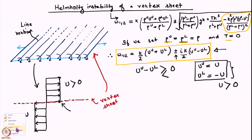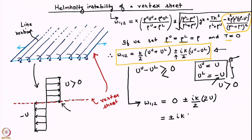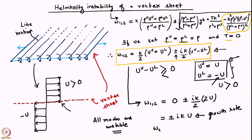If you substitute u_u equals U and u_l equals minus U into the dispersion relation, then omega_{1,2}: the first term goes to zero, and we have ik/2 times (u_u minus u_l) which is just 2U. So this is purely imaginary and equals plus or minus ikU. This tells us something very interesting — any wave number k basically grows. All Fourier modes are unstable, and the growth rate is proportional to k times U.